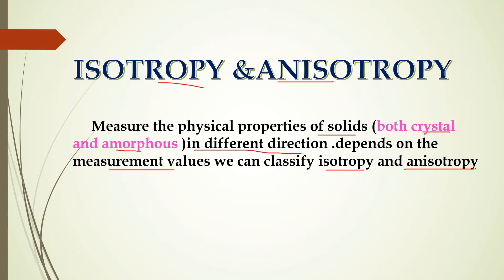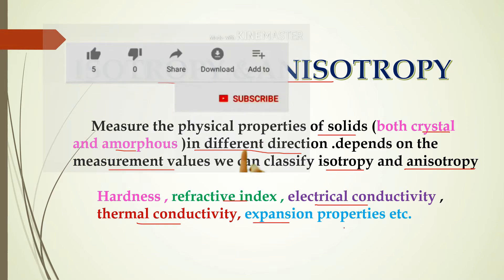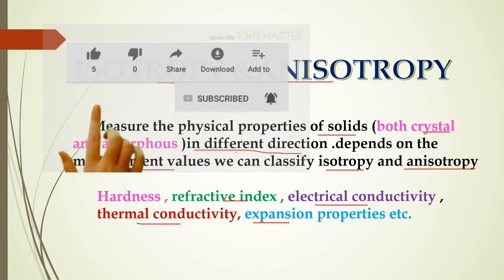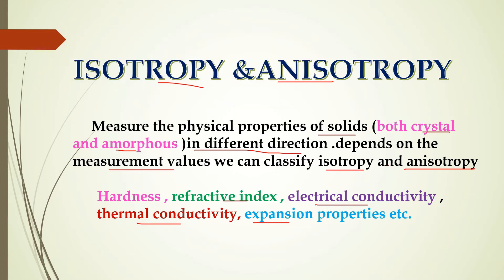Physical properties include, for example, hardness, refractive index, electrical conductivity, thermal conductivity, and expansion properties. At the same time, we can classify isotropy and anisotropy. Let's discuss them one by one — first, isotropy.